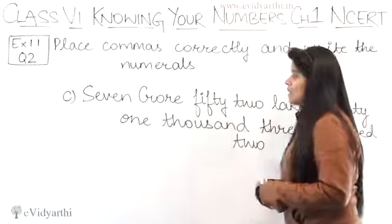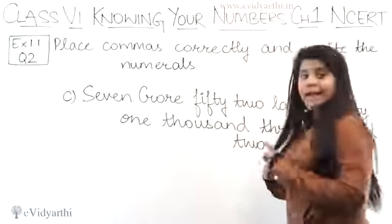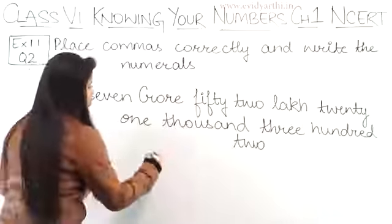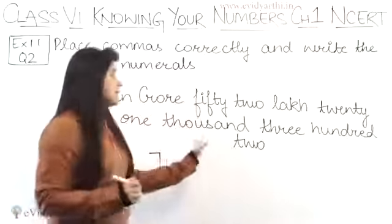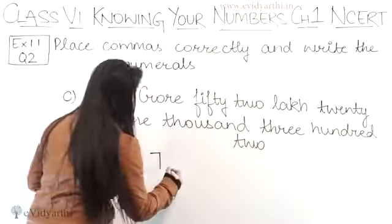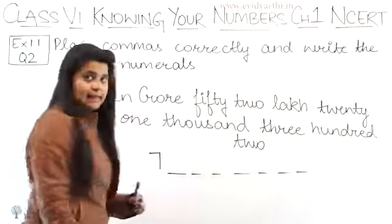Okay, so this is the B part. Now let's come to the next part. Now coming to the C part. C part has the number 7 crore, 52 lakh, 21,302. So now first is 7 crore. So 7. And in 7 how many digits will come? Crore has how many zeros? 7 zeros. So 1, 2, 3, 4, 5, 6, 7 digits will come. Right.